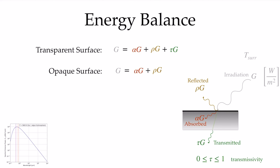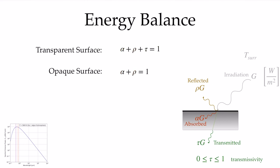Now we think of the energy balance on the surface. There is a certain amount of irradiation G coming in watts per meter squared. Some of it is reflected, some of it is absorbed, and some of it is transmitted. Of that total irradiation, it can either be absorbed, reflected, or transmitted. If it's an opaque surface, the transmissivity is zero, so it can either be absorbed or reflected. The absorptivity plus the reflectivity plus the transmissivity must equal one to conserve energy, and for an opaque surface with transmissivity equal to zero, the absorptivity plus the reflectivity equals one.